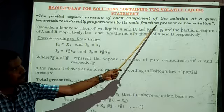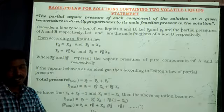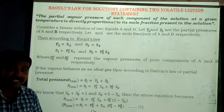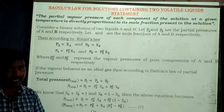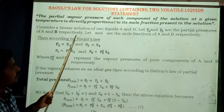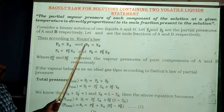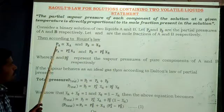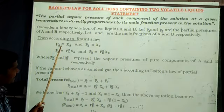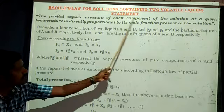Let PA and PB be the partial vapor pressures of A and B respectively. We have to consider the two components A and B. A is having partial pressure PA, and B is having partial pressure PB. According to Raoult's Law, the partial vapor pressure of a component is directly proportional to XA — the mole fraction of that component in the solution.